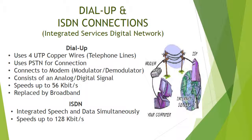Dial-up and ISDN connections — Integrated Services Digital Network — were the first remote connectivity technology developed, since everyone pretty much had a phone line in their home. Dial-up and ISDN share a lot of similarities. Both use four unshielded twisted pair copper wires, or basically telephone lines. They use PSTN for connection, and both connect via a modem. They consist of analog and a digital signal at the central office.